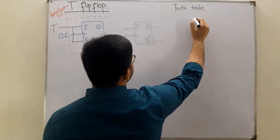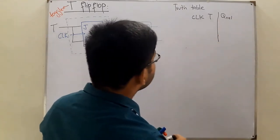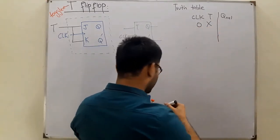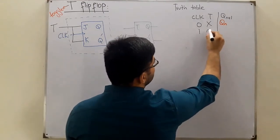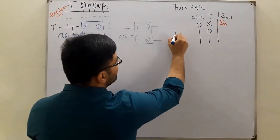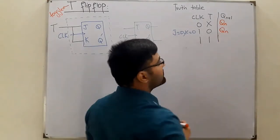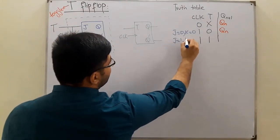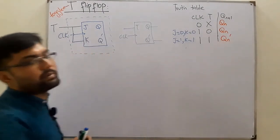For the truth table of the T flip-flop, the inputs are the clock and the T input, and the next state Q(n+1) is the output. When the clock is zero, whatever the value of T, it retains the previous state — that is the memory — so Q(n+1) equals Q(n). When the clock is high and T is low, J is low and K is low, so again you have the memory state and Q(n+1) equals Q(n). When clock is high and T is one, meaning J equals one and K equals one, you have toggling, so Q(n+1) equals Q(n) complement.